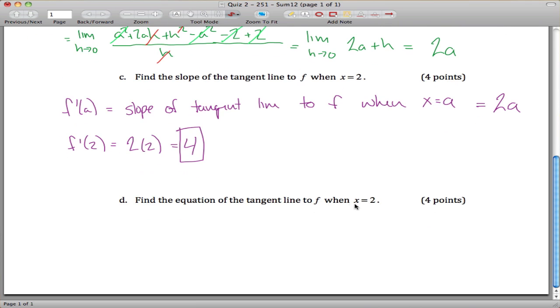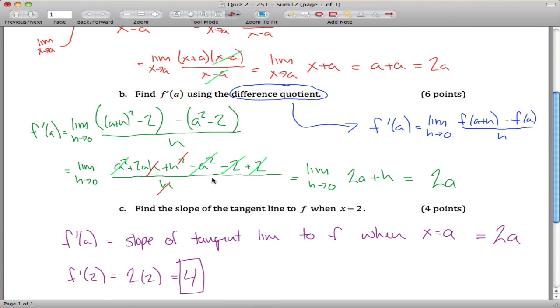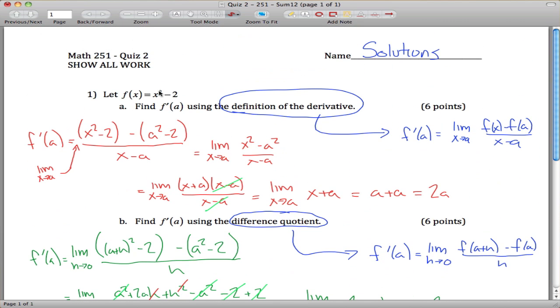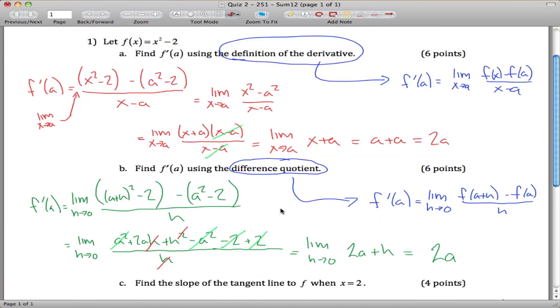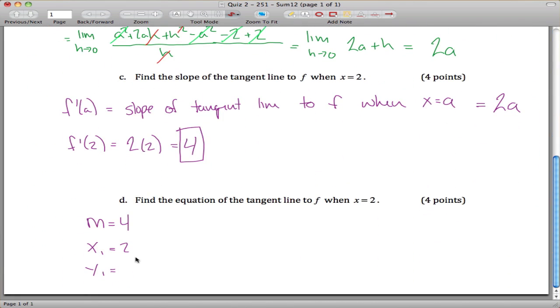Find the equation of the tangent line to f when x equals 2. We need a slope, which we have, and we need a point. Well we know that x is equal to 2, and we can figure out the y that corresponds when x equals 2 if we plug that 2 back into our original function up here. f of x equals x squared minus 2. We get 2 squared minus 2, which is 4 minus 2, which is 2.